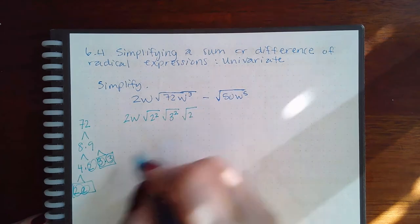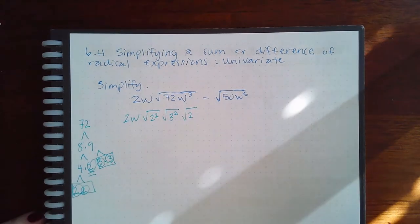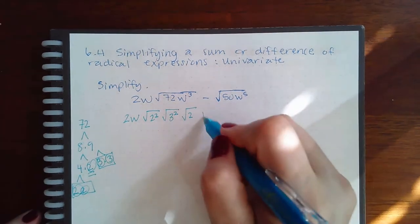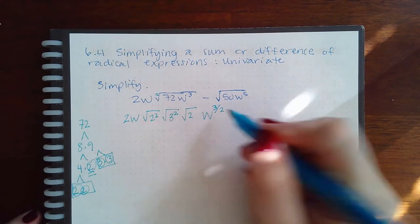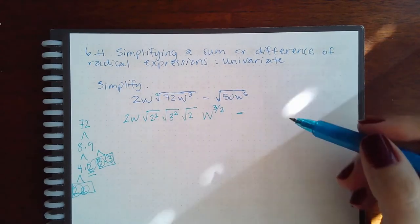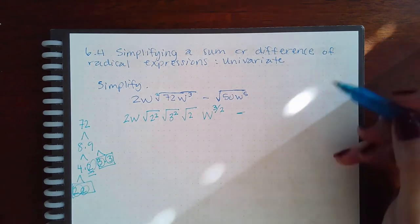But I do still have this square root of this 2 left over. Then for the w, we're going to do 3 power over the 2 index. Now we move on to the next one.